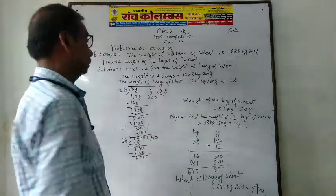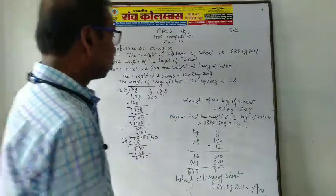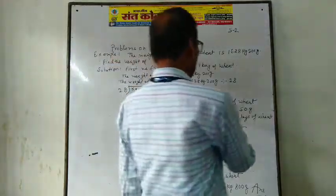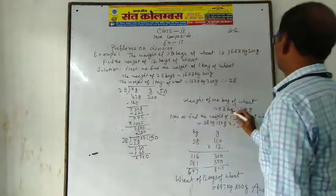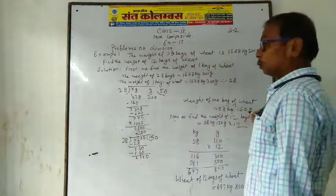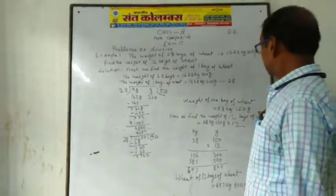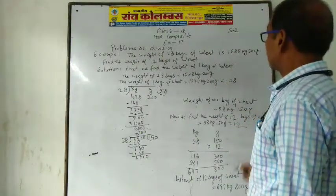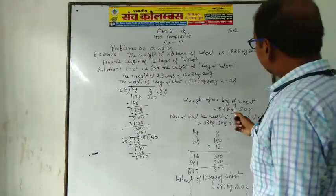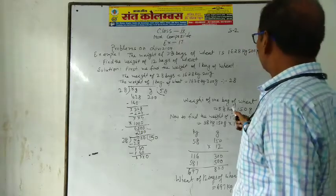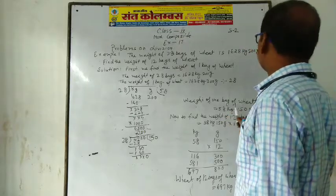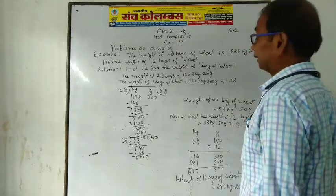The weight of one bag is equal to 58 kg 150 grams. So 1 bag weighs 58 kg 150 grams.